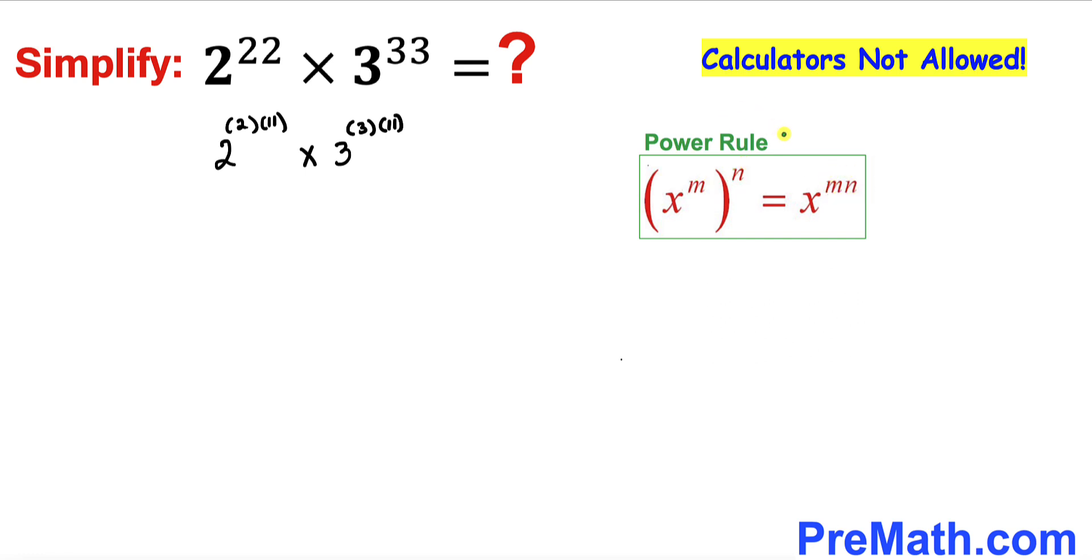And now we are going to apply this power rule on both of these parts. Let's focus on this part 2 power 2 times 11. So this could be written as 2 power 2 and then power 11. And now let's focus on this second part. This could be written as 3 power 3 and then power 11.